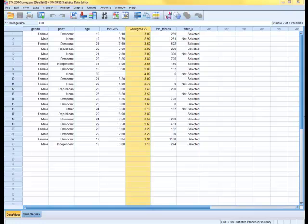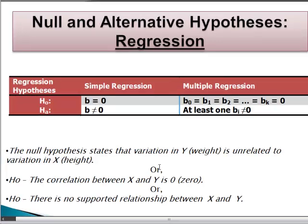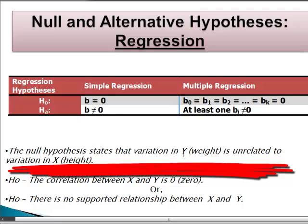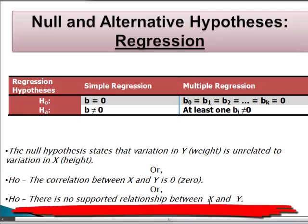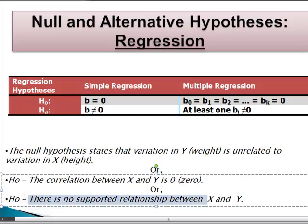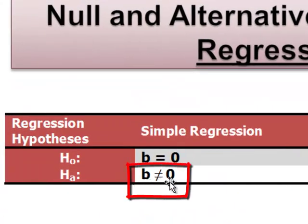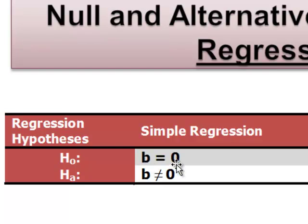To do a regression, we first state the null hypothesis. One way is to say the null hypothesis states that the variation in Y, or GPA, is unrelated to the variation in X, or age. Another way is that the correlation between X and Y is zero. The best way is probably: there is no supported relationship between age and college GPA, meaning the regression coefficient B, the slope, is equal to zero. Therefore, the alternative hypothesis is that the regression coefficient is not equal to zero.